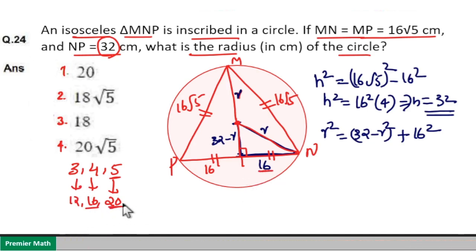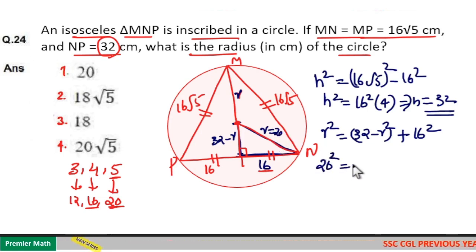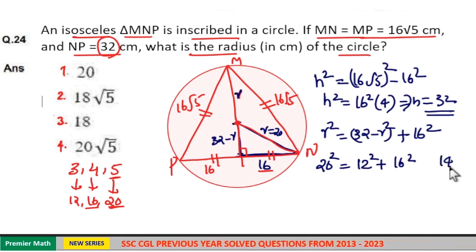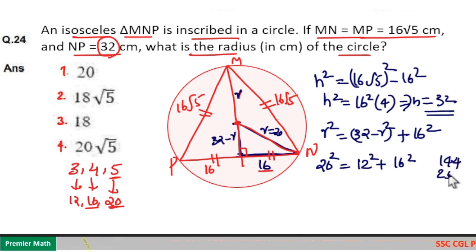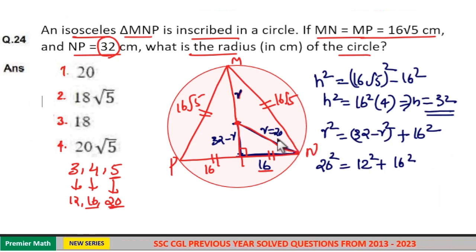We have 16 here, so check if R equals 20 satisfies the equation. If R is 20, then 32 minus 20 equals 12. So 12 squared plus 16 squared equals 20 squared. Checking: 144 plus 256 equals 400, which is 20 squared. So R is equal to 20. The radius is 20, which is option 1.